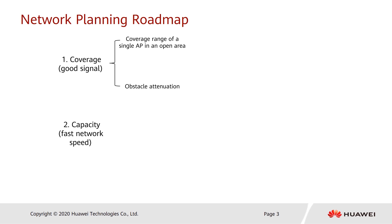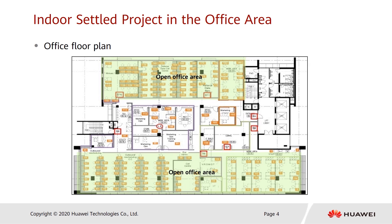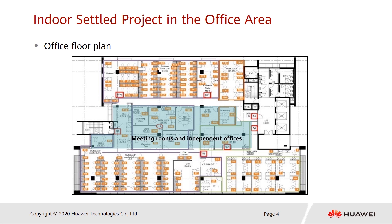Factors affecting signal coverage include the coverage range and obstacle attenuation of a single AP in an open area. For large open office areas, if we know the coverage range of a single AP, we can determine the number of APs required. For small independent office areas, we also need to know the attenuation of walls to determine whether one AP can cover two or more rooms.